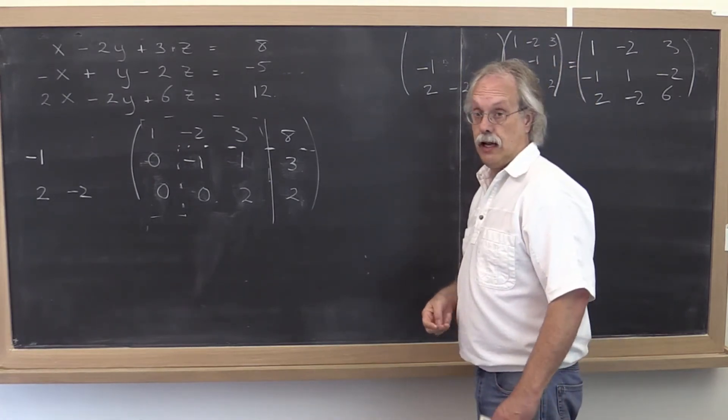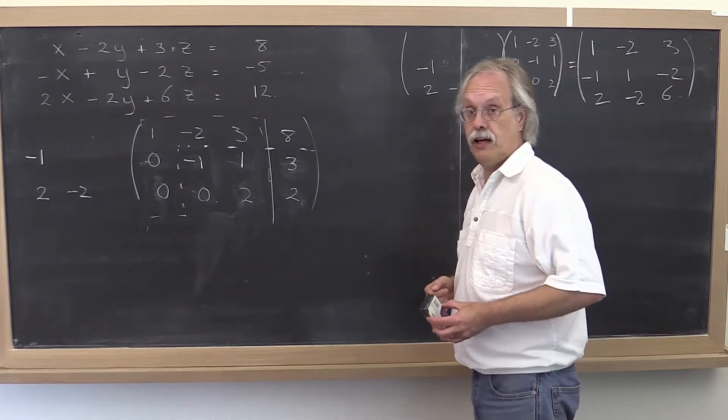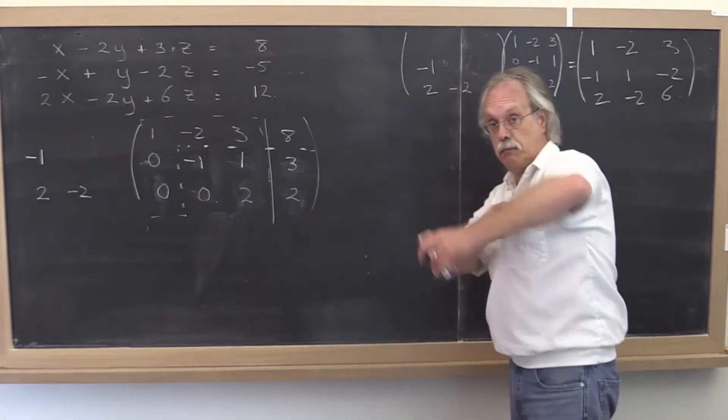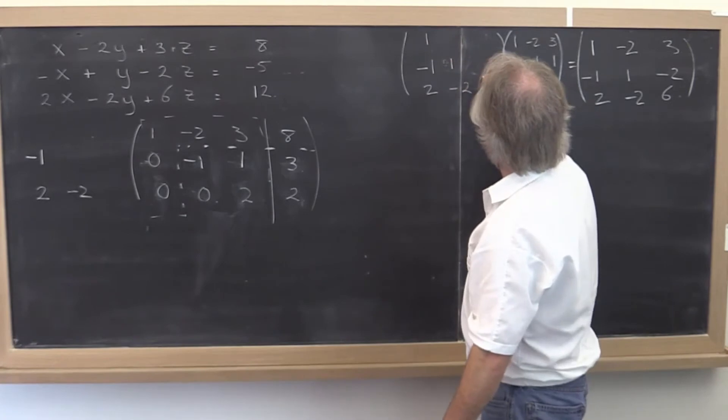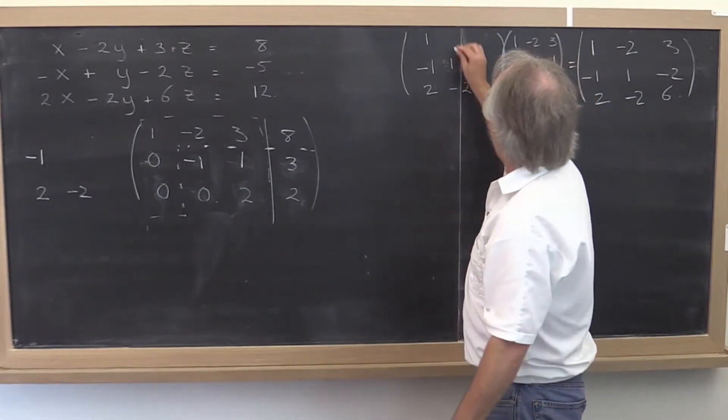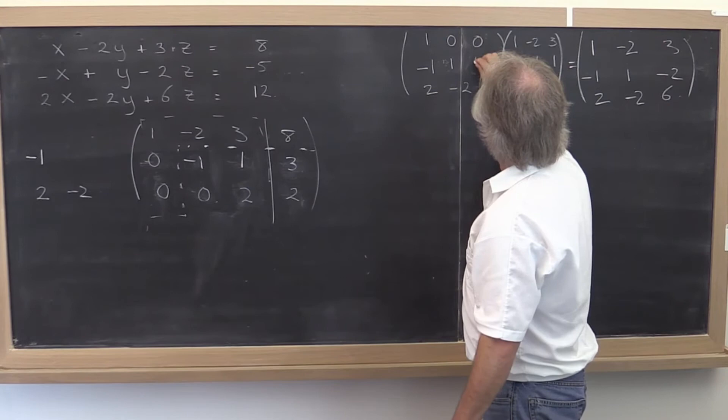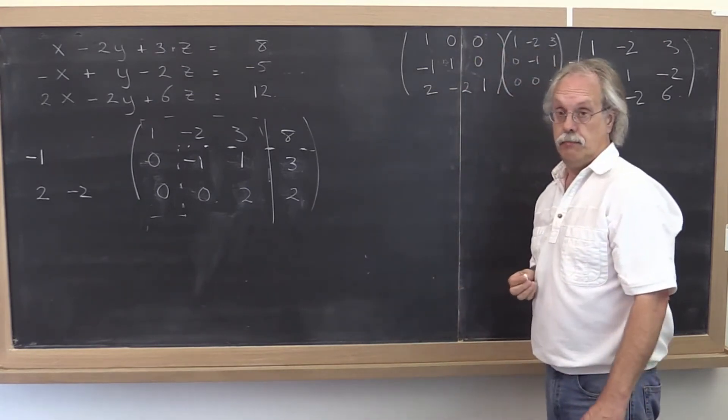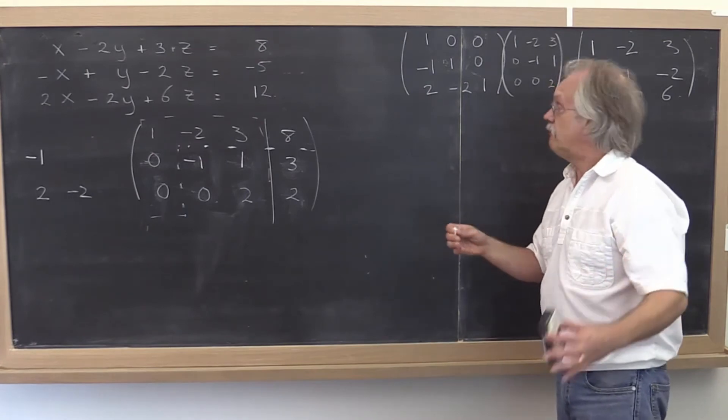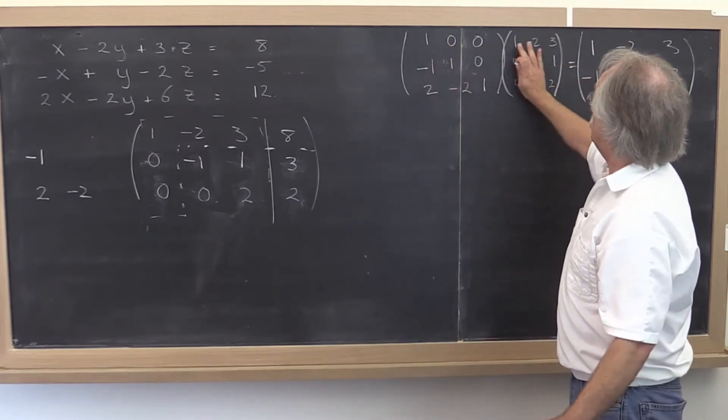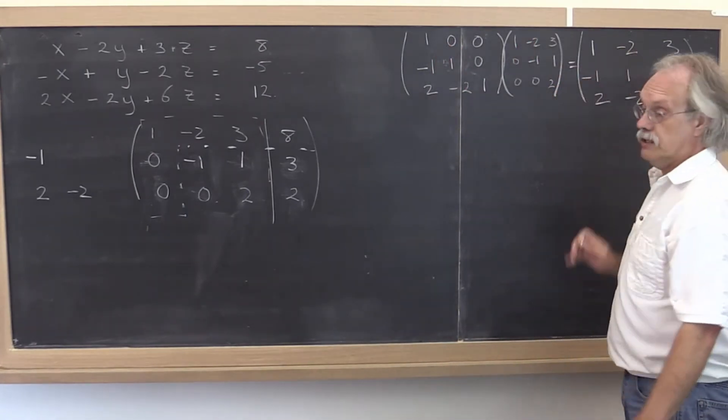Now this is the part that always makes me feel like a magician. Nothing up my sleeves. Here we go. If we go and we put 1s on the diagonal in this matrix and we put 0s above the diagonal, then magic, if you multiply this matrix times that matrix, you get that matrix.